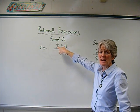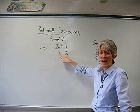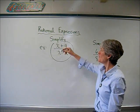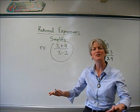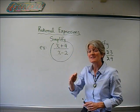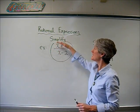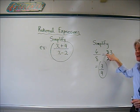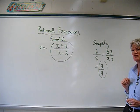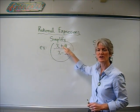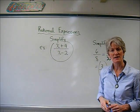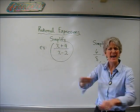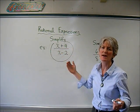Looking at x plus 4 over x minus 2, I can't factor either of those any further, so that is fully simplified as is. I know some of you are tempted to cross out those x's and those 2s, but you can't do that. When you're dividing — which is what crossing things out means — you can only divide to undo multiplication. Division does not undo addition or subtraction. Also, I have two terms in the numerator and two terms in the denominator, and you can't divide when you've got two terms like that unless they're identical.